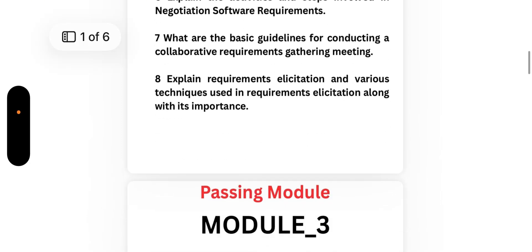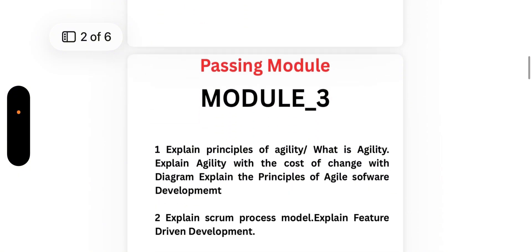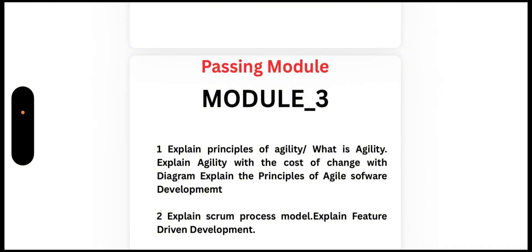Now Module 3 — again a passing module. If you want to pass only, focus on Modules 1, 2, and 3 fully. If you want to score more than 90 marks, go through all five modules. For Module 3: First, explain the principles of agility. Second, explain agility with the cost of change with a diagram, and explain the principles of agile software development and the Scrum process model.